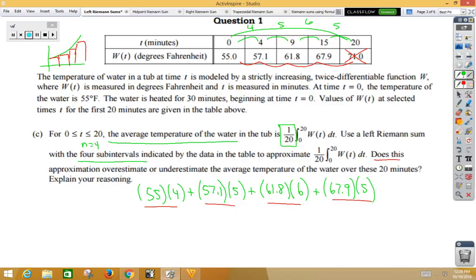It then says, does this approximation overestimate or underestimate the average temperature? Well, once we add this up and we divide by the 20, that would give us our average. Again, if we look at our picture, all of these values, the error is under the curve, so that would make it an underestimate, because if the graph is strictly increasing, then a left Riemann sum is an underestimate.